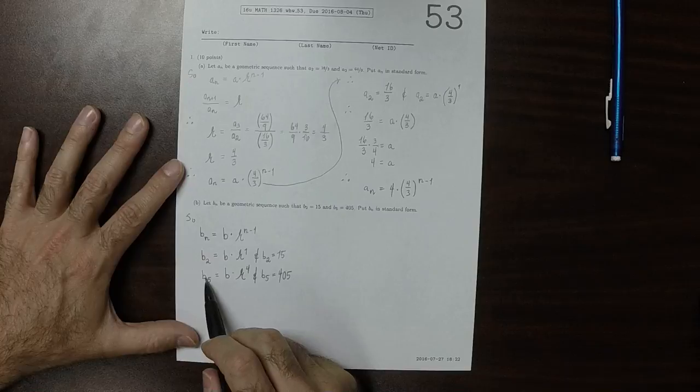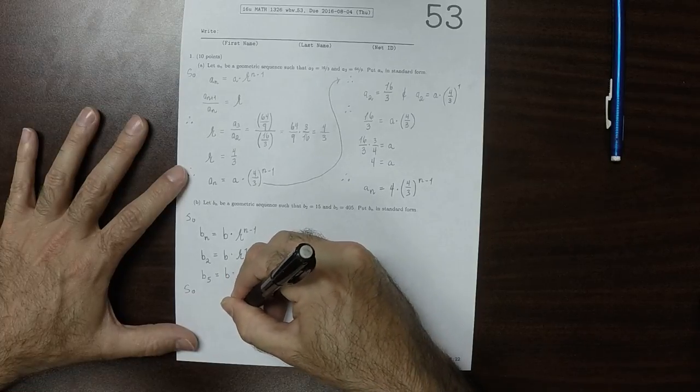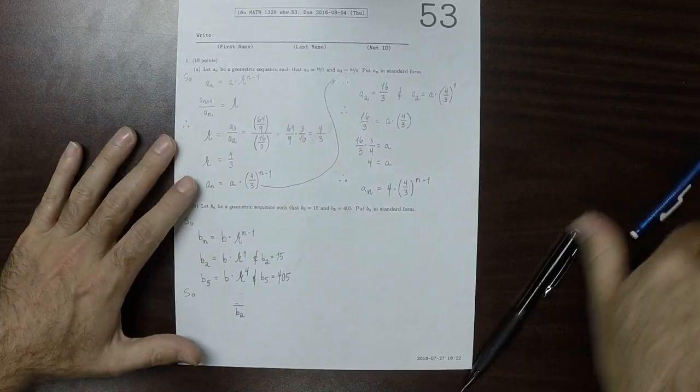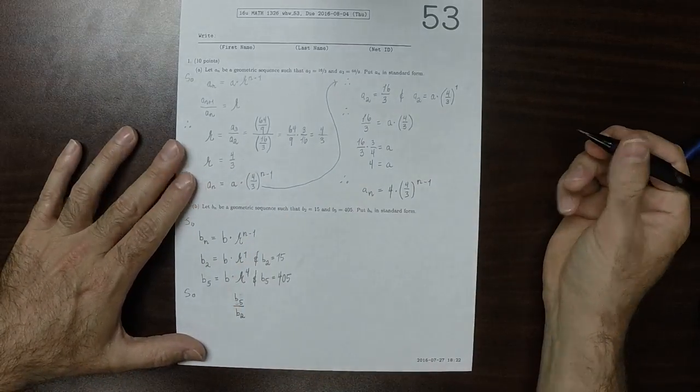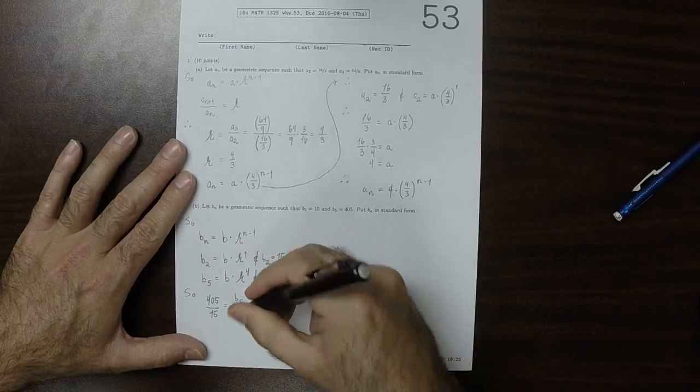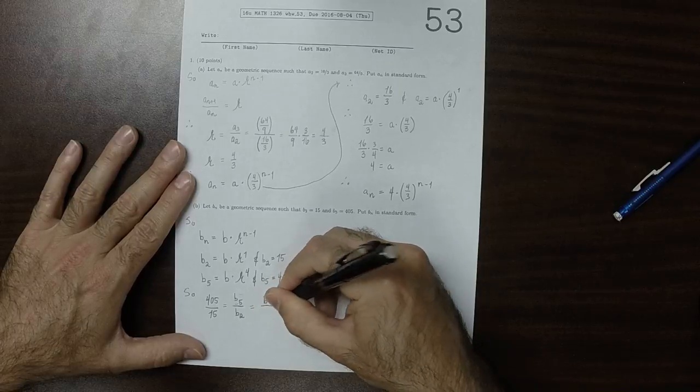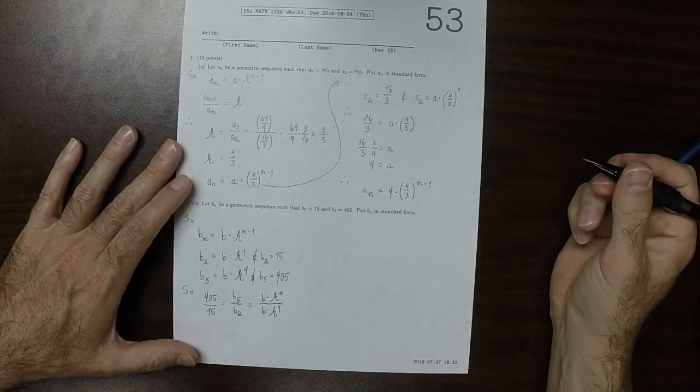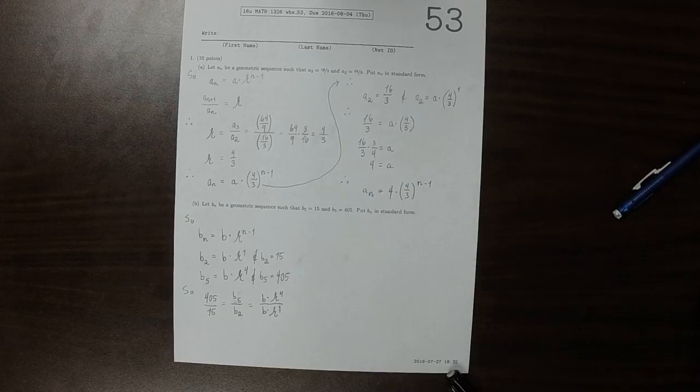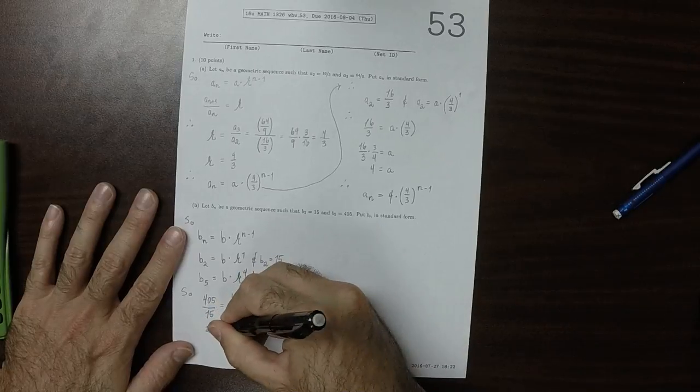So we can construct the ratio b5 over b2. On the one hand, that's 405 over 15. And on the other hand, that is b multiplied by r to 4 divided by b multiplied by r to 1. So simplifying that, 405 divided by 15, well, that's 27. So 27 is equal to...